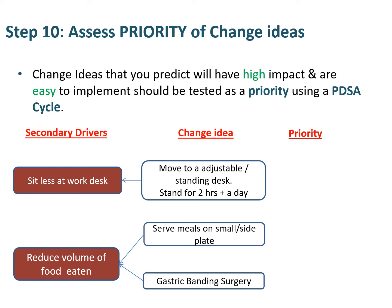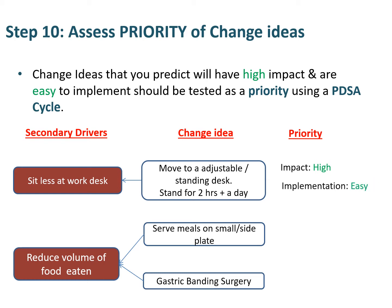With David, the change ideas that have a high impact and are easy to implement are the things that he should test as a high priority using Plan Do Study Act cycles. One of the change concepts he's going to trial is moving to an adjustable standing desk and standing for at least two hours a day. We thought it would have high impact on him losing weight — it's a bit of a grey area, but we felt it would be high impact. For implementation, he does have an adjustable standing desk at his workplace, so that would be easy for him to do. So that's something we would test early on in the PDSA cycle.